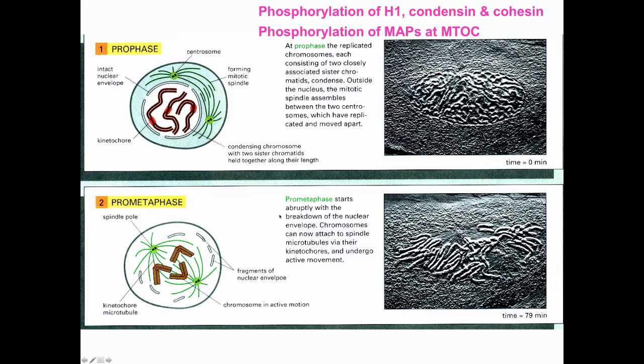Prometaphase starts abruptly with a breakdown of the nuclear envelope, which occurs because of phosphorylation of nuclear lamins. You may remember there are three groups of nuclear lamins: lamin A, lamin B, and lamin C. These are on the inner face of the nuclear envelope and help hold its integrity together. They also may serve as attachment sites for chromosomes during interphase, not only for DNA replication but for transcriptional activity.